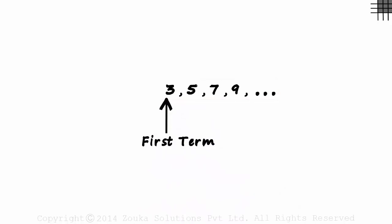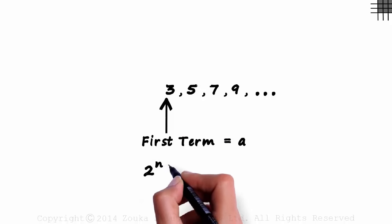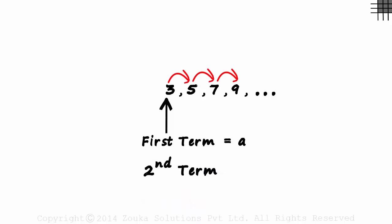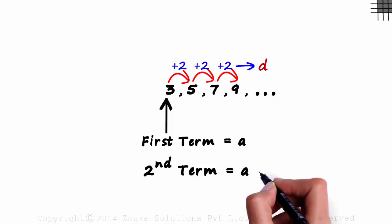To define the nth term in a simpler way, we just call the first term as A. How do we define the second term then? The common difference as we can see is 2. If we call the common difference as D, the second term can be written as A plus D.